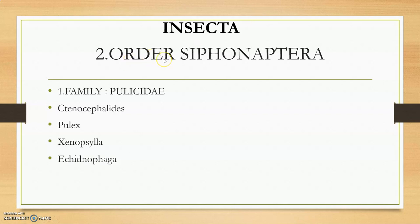The next order is Siphonaptera, comprising fleas. In that we have only one family — family Pulicidae. The genera are Ctenocephalides, which is very famous for dogs: Ctenocephalides canis and Ctenocephalides felis. Next is the Pulex genus, then the Xenopsylla genus, and the genus Echidnophaga. These four genera come under family Pulicidae in order Siphonaptera.